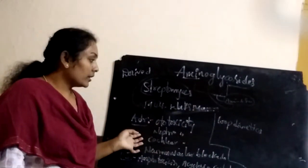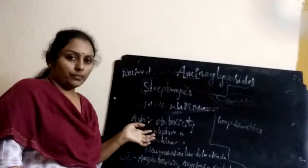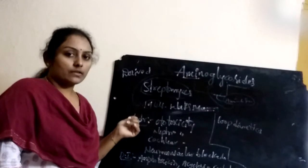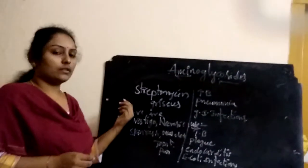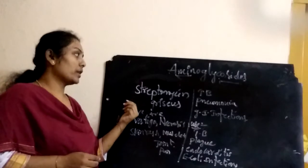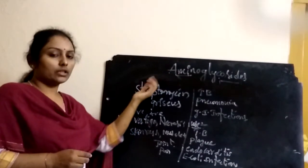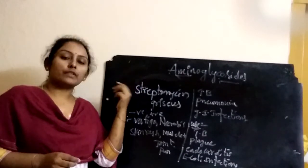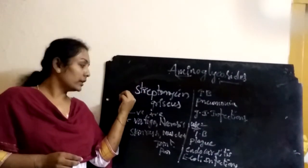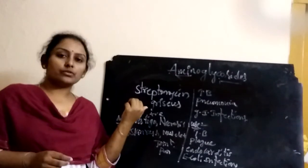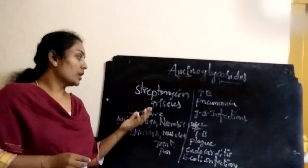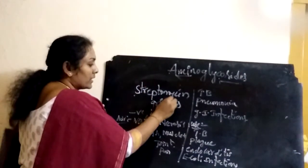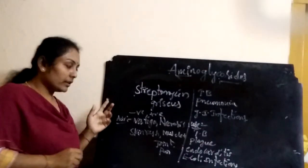Streptomycin is classified under systemic aminoglycosides and was the first aminoglycoside antibiotic used as a chemotherapeutic agent. It is obtained from the actinomycete Streptomyces griseus and has a broad spectrum of activity, acting against both gram positive and gram negative bacteria.